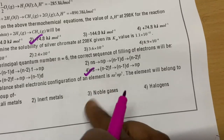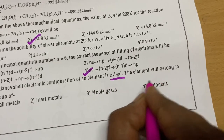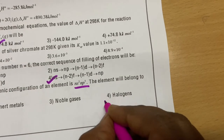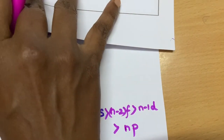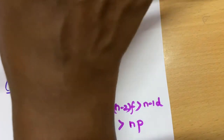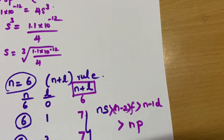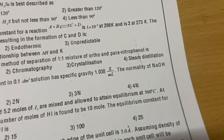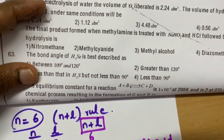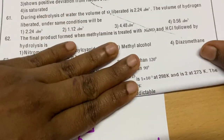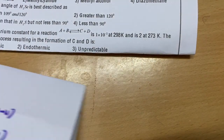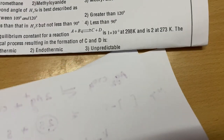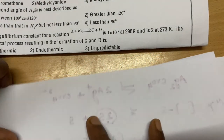Fourteenth question: The valence shell electronic configuration Ns²Np⁵ — the element will belong to the halogens. No detailed explanation needed here. I am explaining a little slowly today so you will understand; day by day we will speed up. If you follow my videos regularly, I will put in my utmost effort to help you.